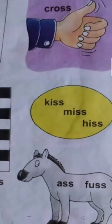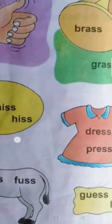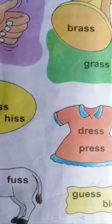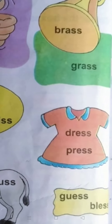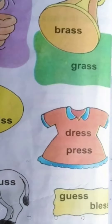A double S — ass. F U double S — fuss. D R E double S — dress. P R E double S — press. G U E double S — guess. B L E double S — bless.